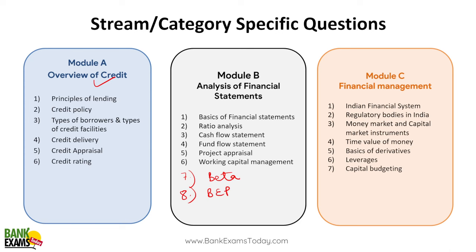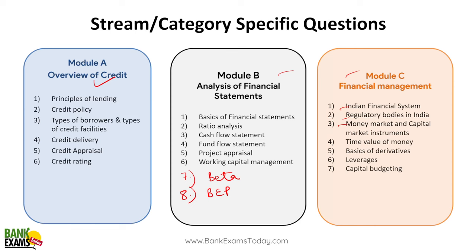Working capital management, and then in financial management: Indian financial system, regulatory bodies in India, capital market, money market instruments, derivatives, time value of money — these are some key topics. Export finance, priority sector lending — it's an RBI master circular. IRAC norms — RBI master circular. Basel norms is an RBI circular. Government-sponsored schemes are very, very important. Documentation is important — it includes the Registration Act, Stamp Duty Act, and Limitation Law.